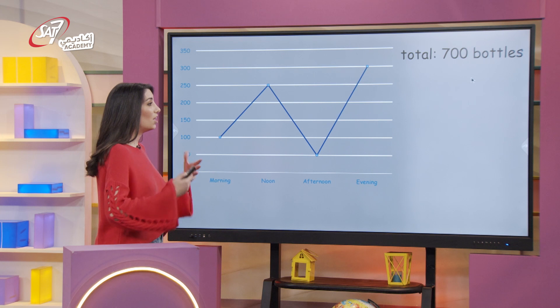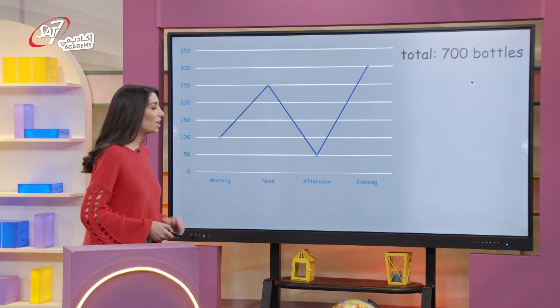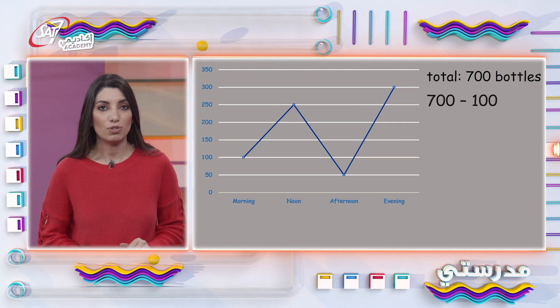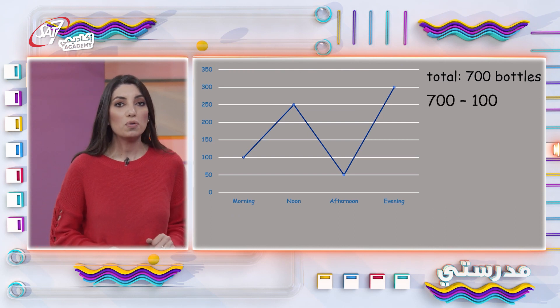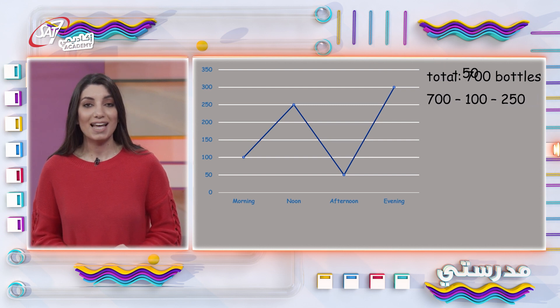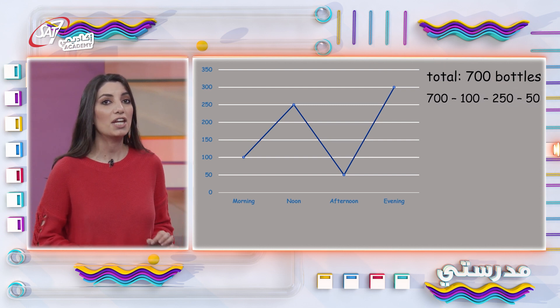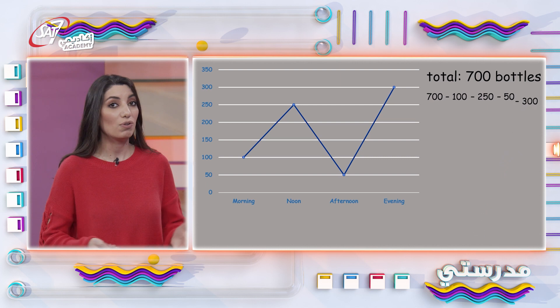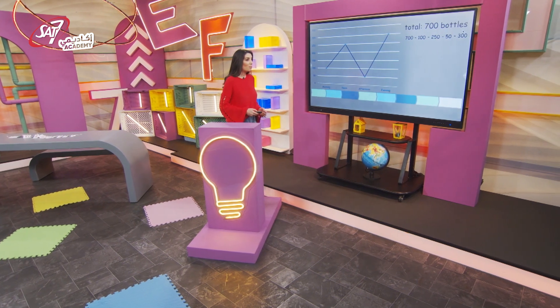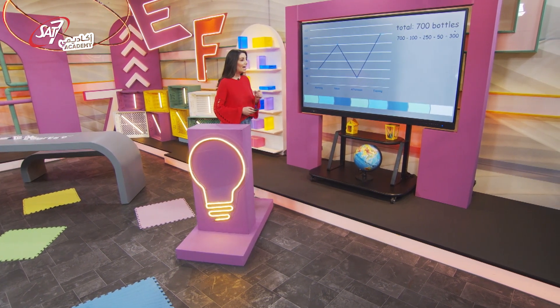There were seven hundred bottles. In the morning, one hundred were sold — one hundred taken away, we subtract. At noon, two hundred fifty bottles were sold — subtract another two fifty. In the afternoon, fifty bottles were sold. And in the evening, three hundred bottles were sold and taken away. Let's subtract, going backwards by hundreds and by fifties.